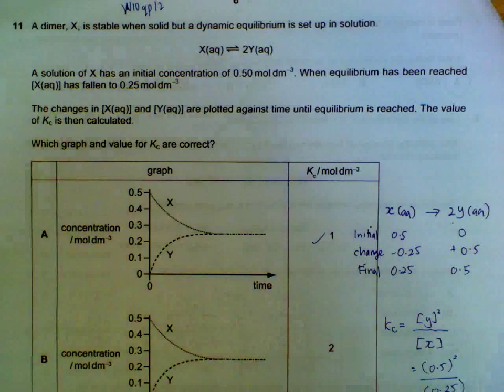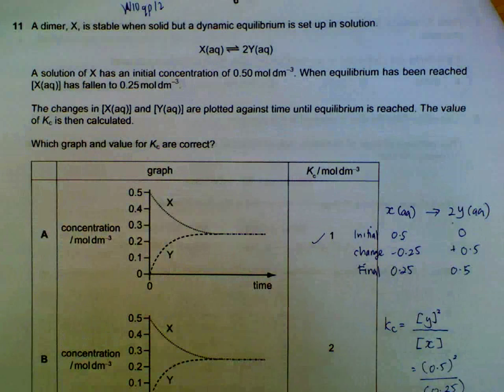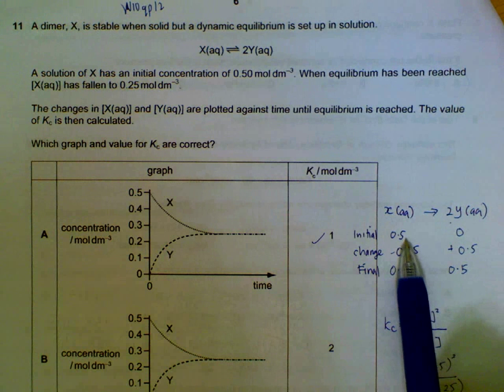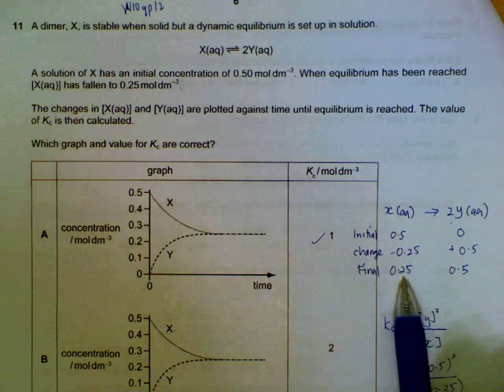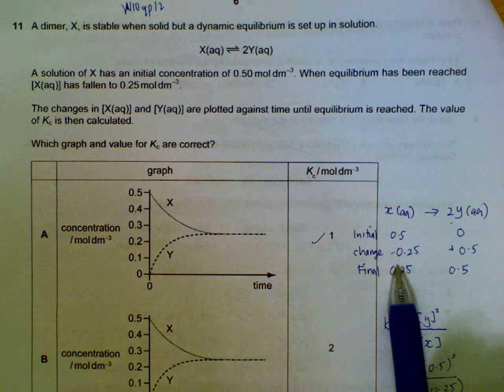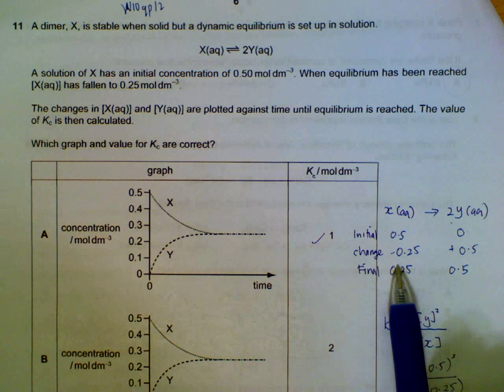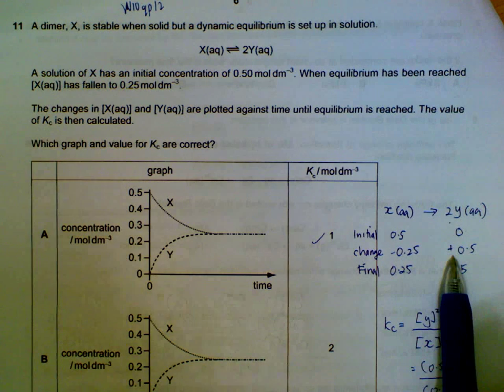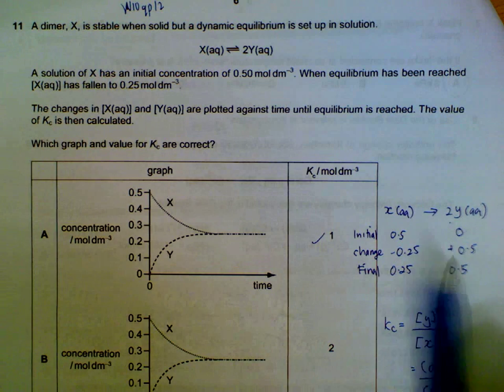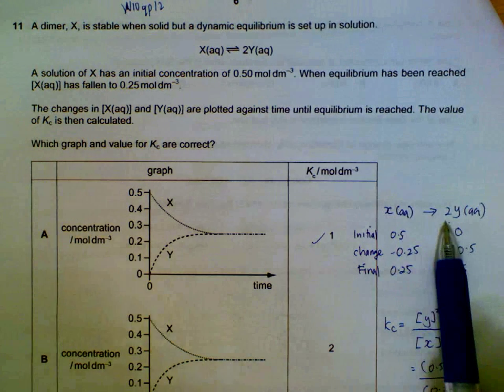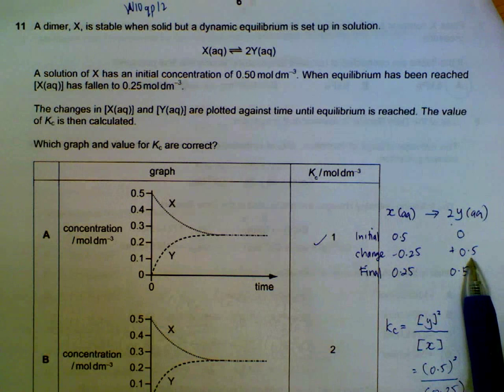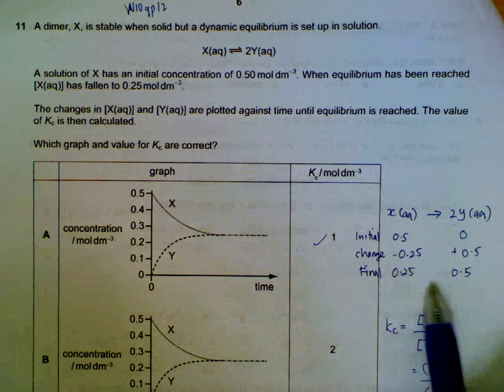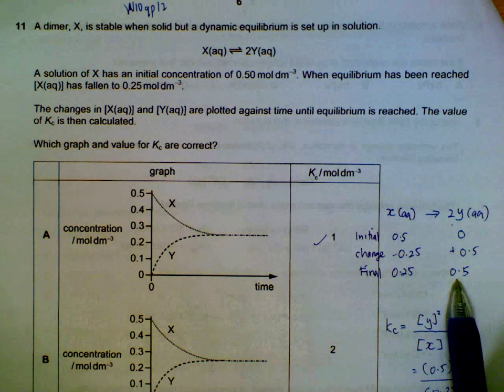Number 11, figuring out the equilibrium amounts for x and y. X initial we start off with 0.5, final we end up with 0.25, so there is a decrease in 0.25. So when 0.25 of x is used up, twice the amount of y is produced because of the ratio 1 is to 2, so 0.5 moles of y is produced. So the final concentration is 0.5 moles per dm cube of y.